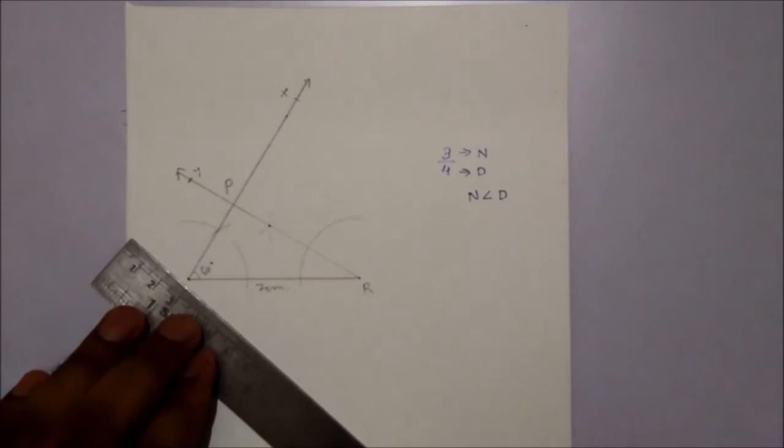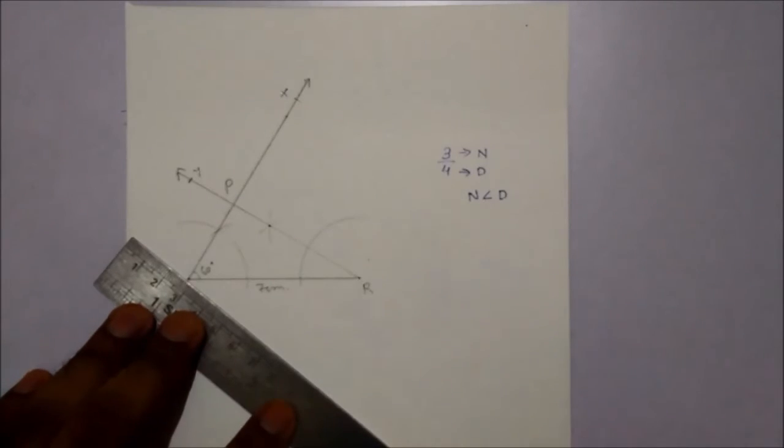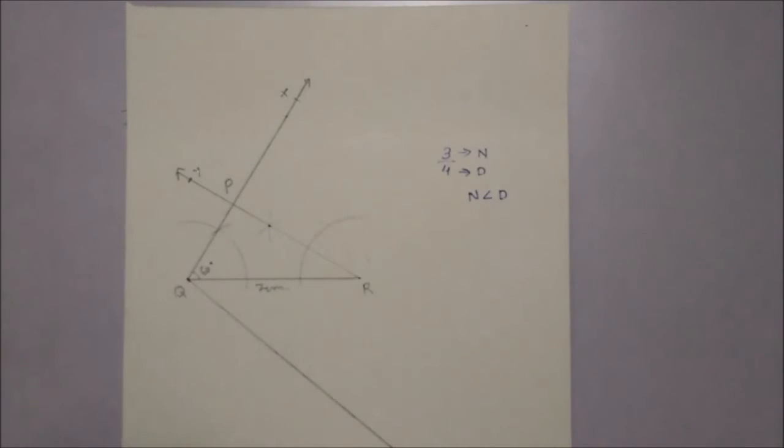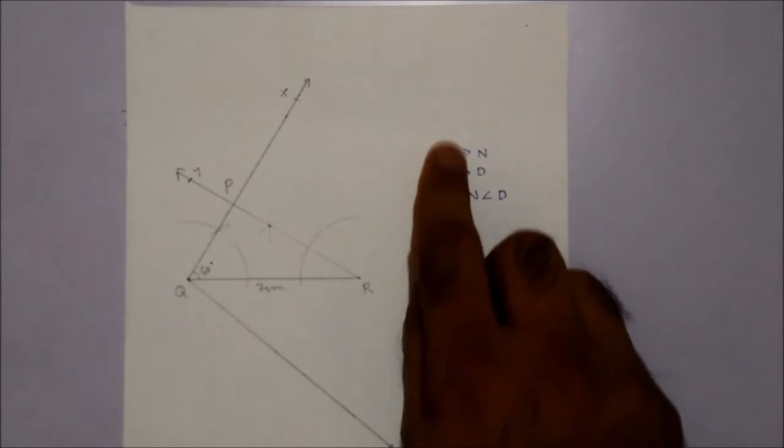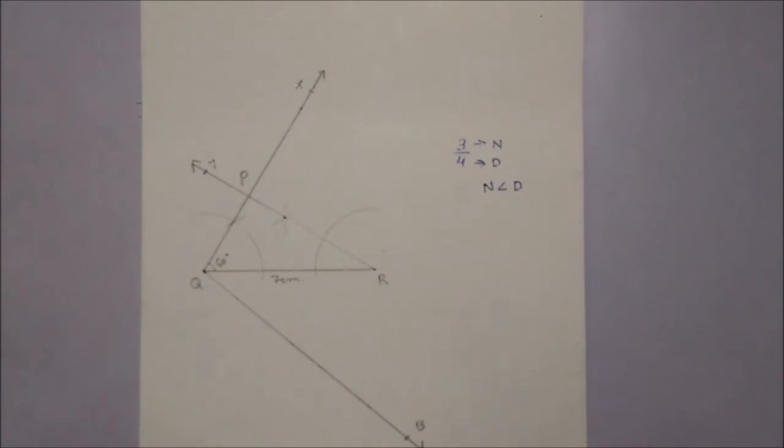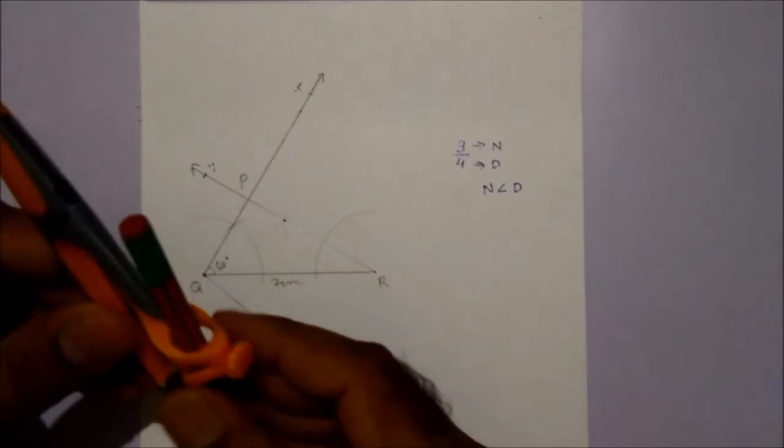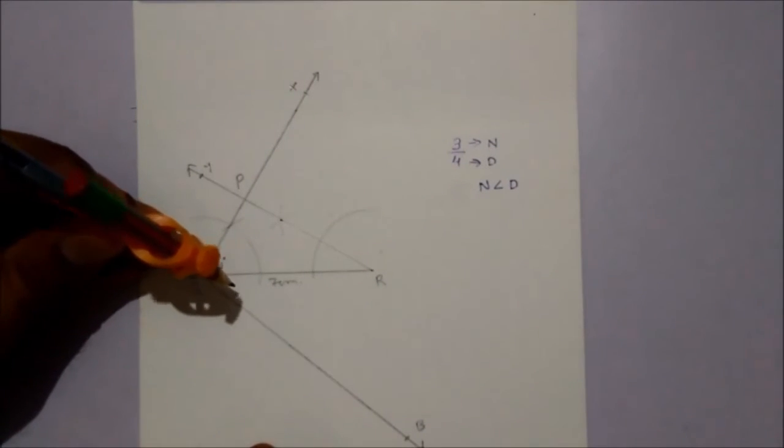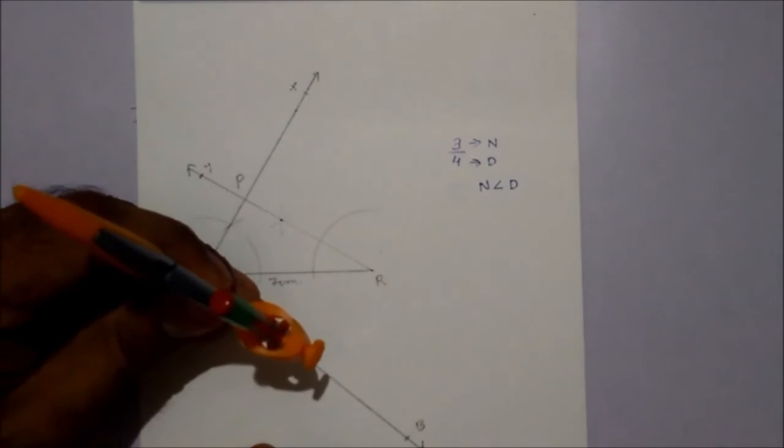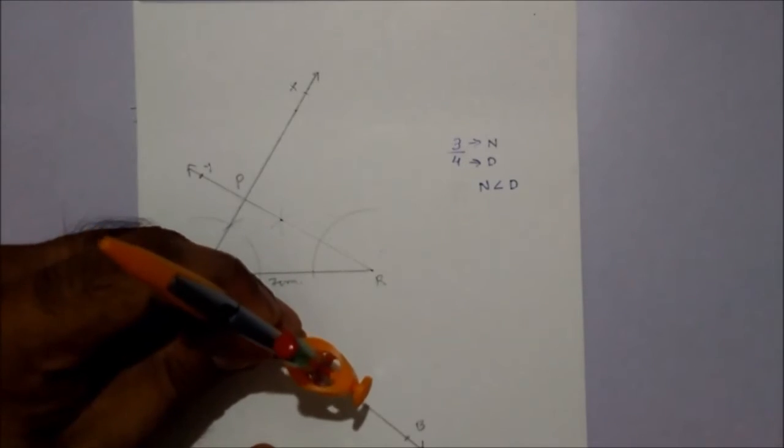Now from Q, let's draw an acute angle. Suppose this is R, Q, V. Here 4 is the highest, so we have to mark 4 arcs by taking some radius. 1, 2, 3, 4.